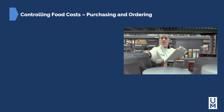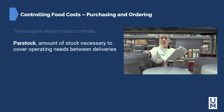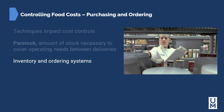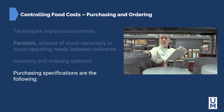In purchasing and ordering, several techniques impact food cost controls. Par stock is the amount of stock necessary to cover operating needs between deliveries. Inventory and ordering systems may be manual or electronic. Purchasing specifications include item grade, quality, packaging, and unit size. It's important to know your purchasing specifications — for example, if you ask for romaine lettuce and wanted whole heads but received bagged cut romaine, that may not work for your operation.